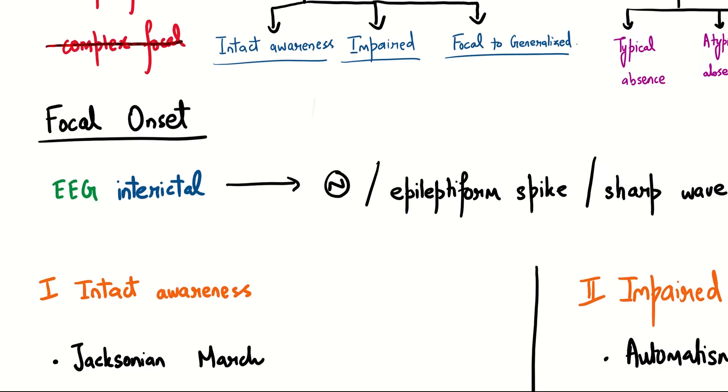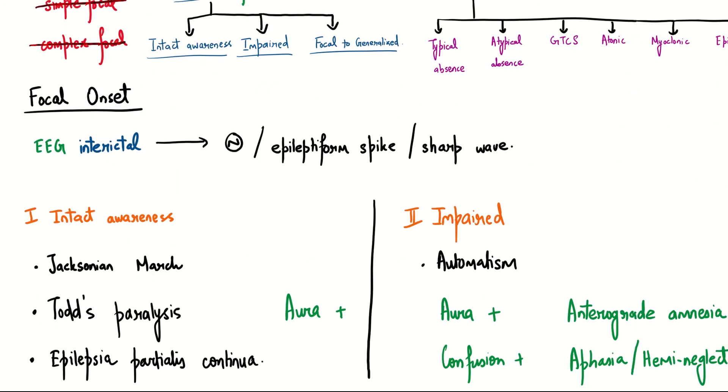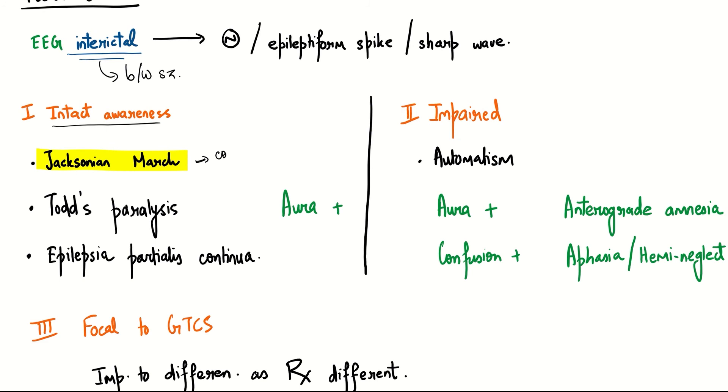In focal onset seizure, the EEG in the interictal period, which means between seizures, will show normal or epileptiform spike or sharp wave. In intact awareness, we have the Jacksonian march, where contractions begin from fingers and then progress to the entire arm, moving from one point of the extremity forward.